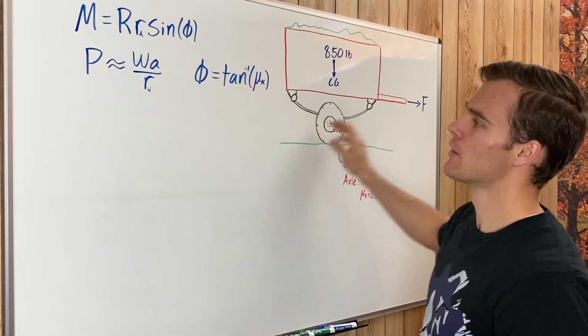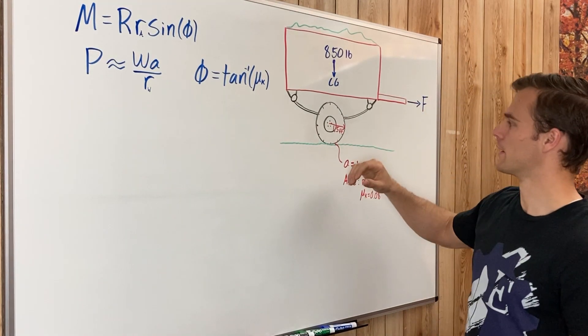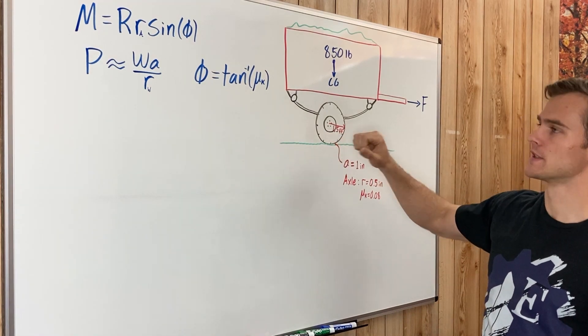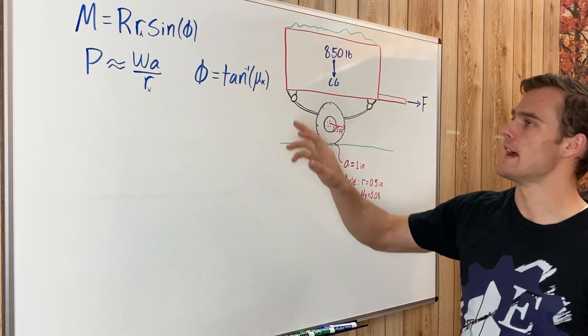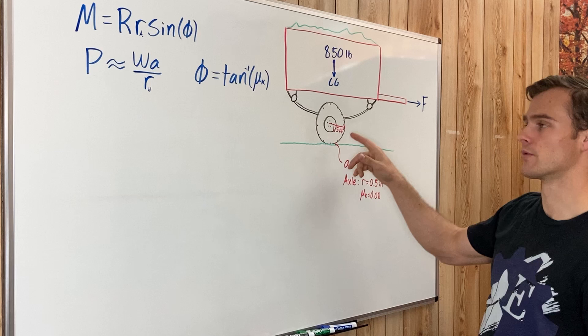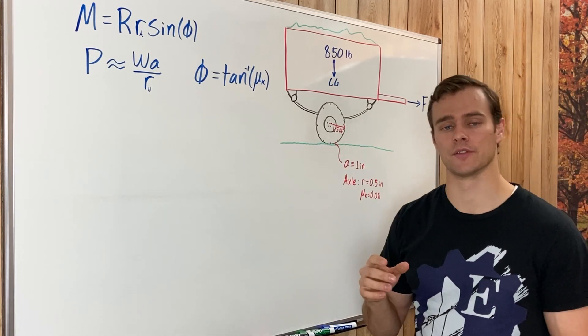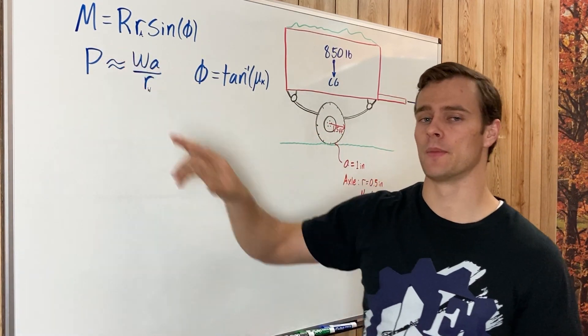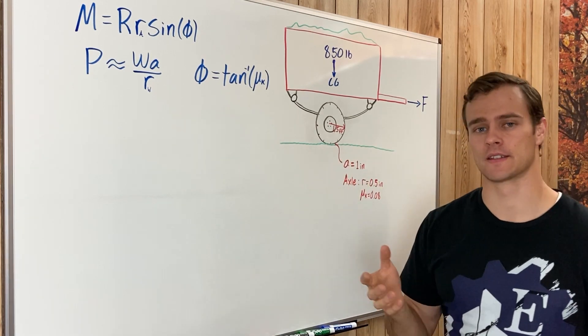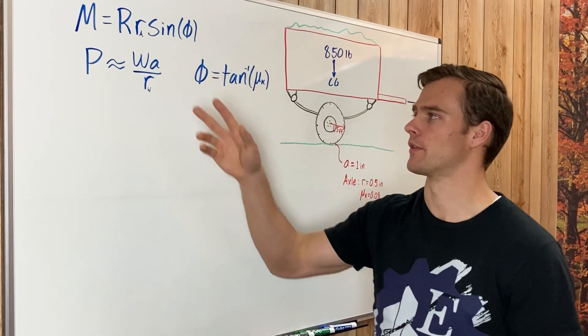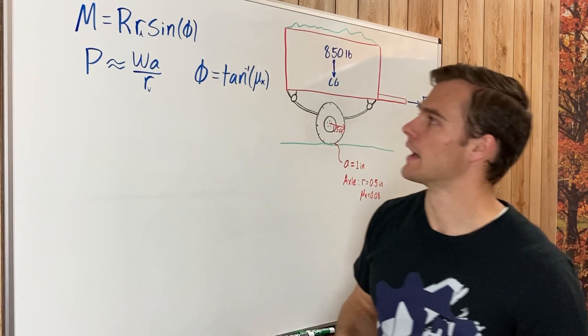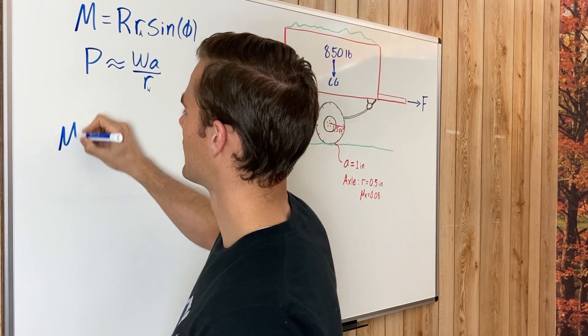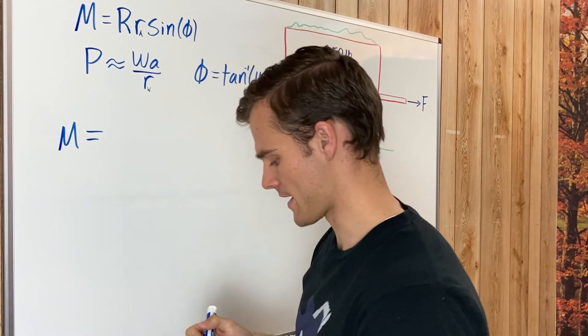P is the force needed when we're pulling on the axle to overcome the rolling resistance in the tire. M is the moment needed to overcome the frictional forces in our journal bearings on those axles. To get a force out of that moment, we need to divide it by a distance. We'll get that in a little bit after we solve for M. It doesn't really matter which one we start solving for first. We will pick M.